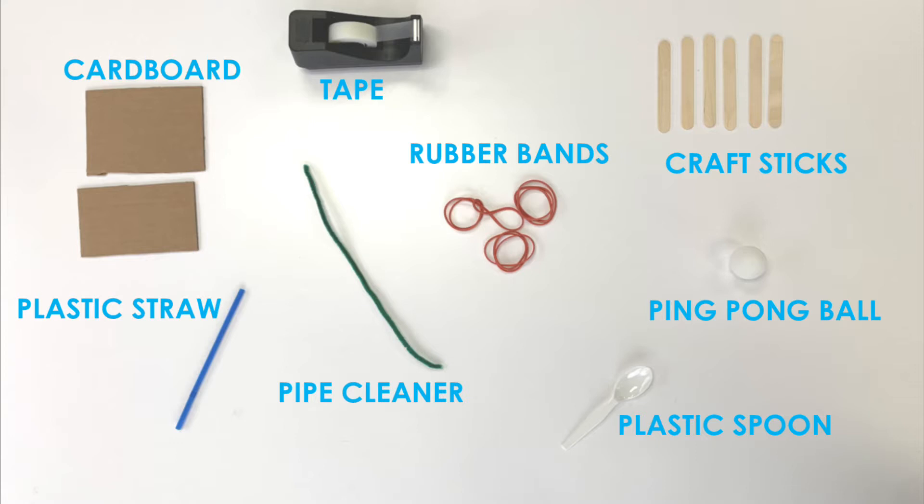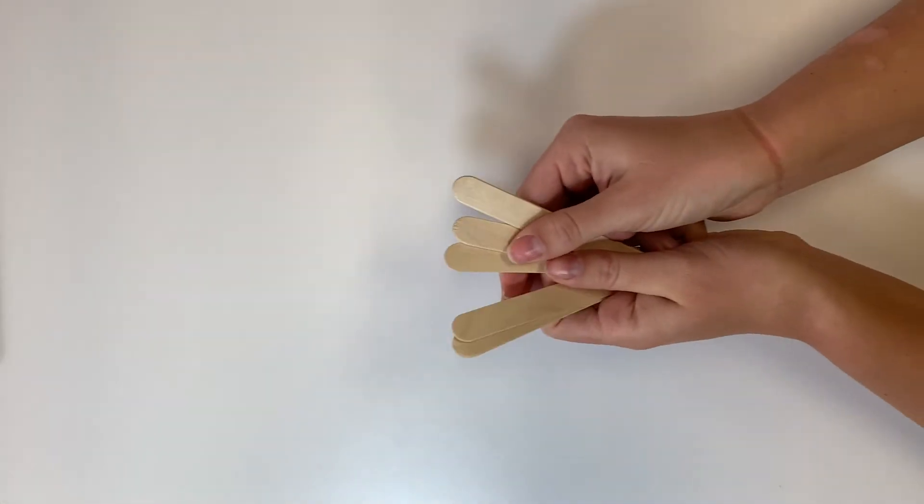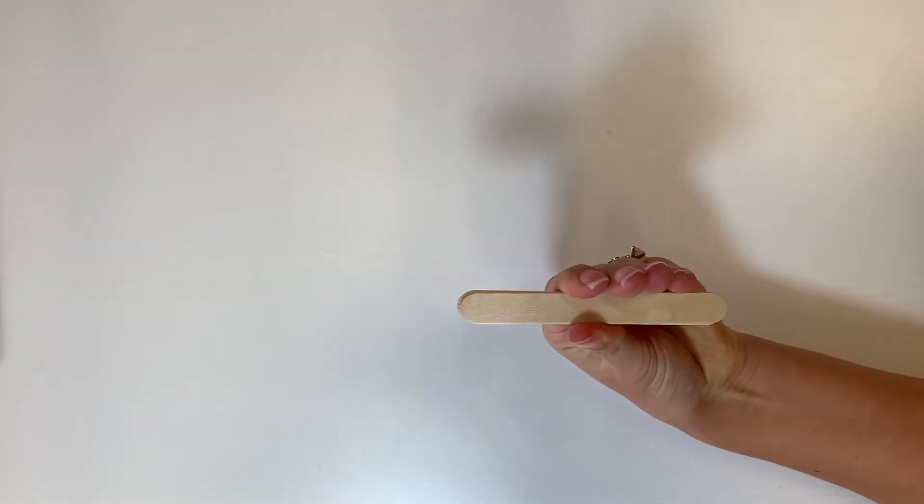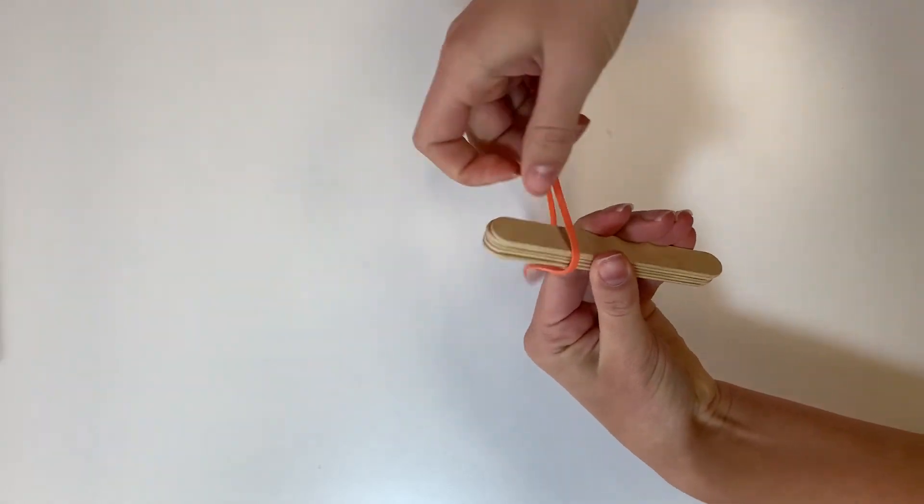For the catapult, take five sticks and stack them, securing one end with a rubber band. You'll need to wrap the rubber band around several times to make it nice and tight.